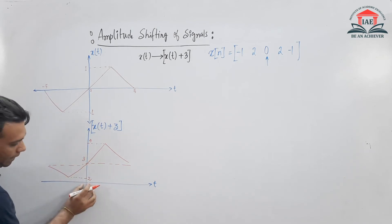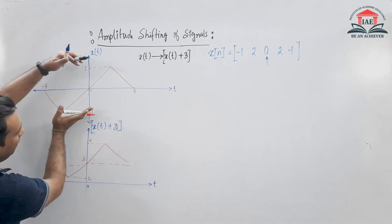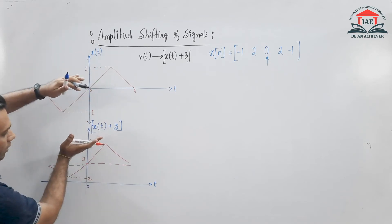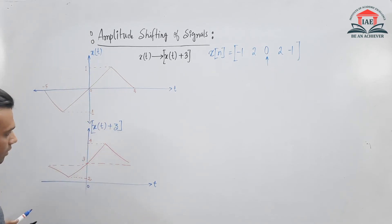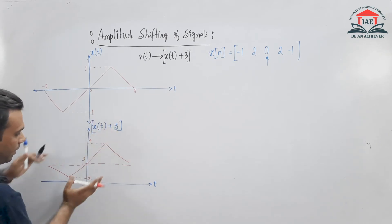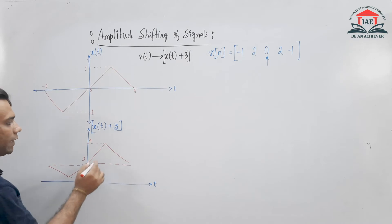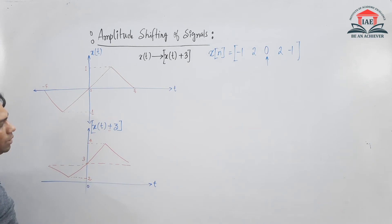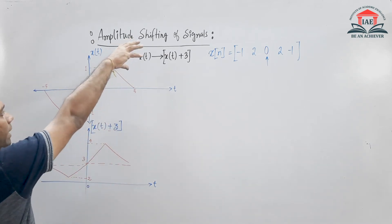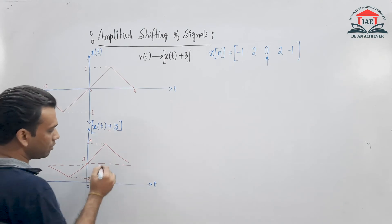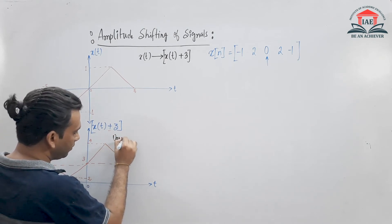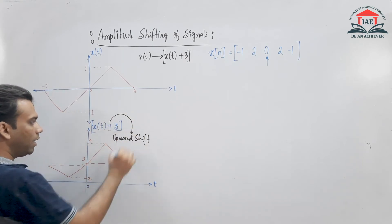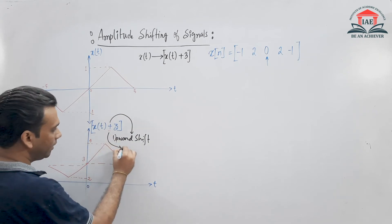The reference value is now 3 — here at the value 3 is the new origin of the signal. That means this signal is upward shifted. So x(t) + 3 gives an upward shift. Similarly, if I give a minus sign, the signal will move in the downward direction — a downward shift.